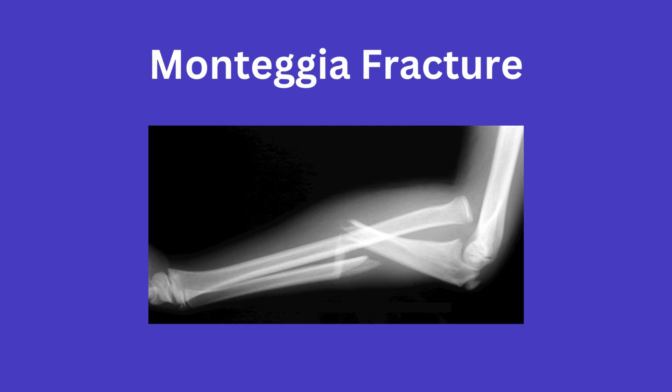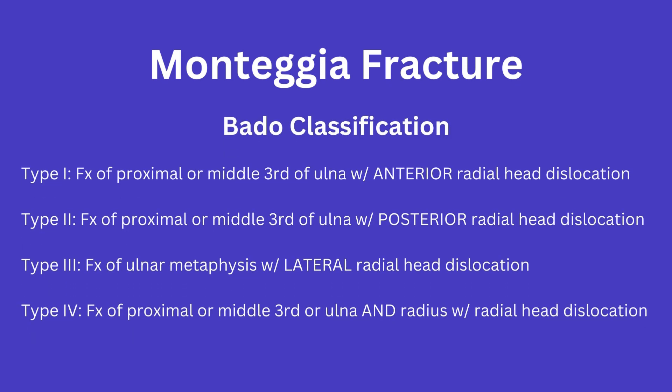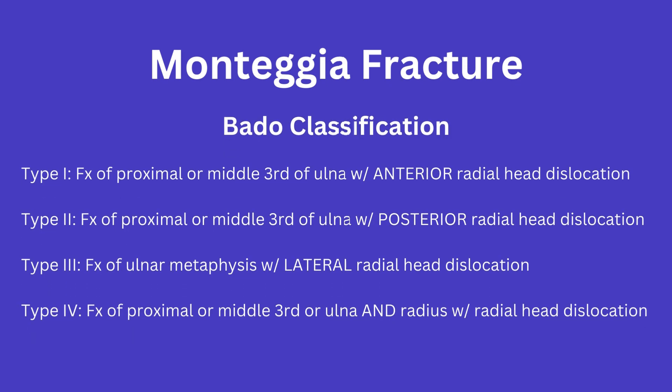They may ask you about the classification system for the Monteggia fracture, and this would be the Bado classification. For the Bado classification, there are four types. Type 1 involves a fracture of the proximal or middle third of the ulna with an anterior dislocation of the radial head.